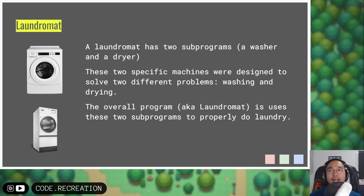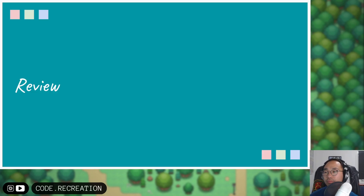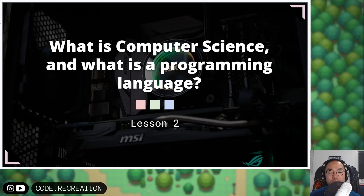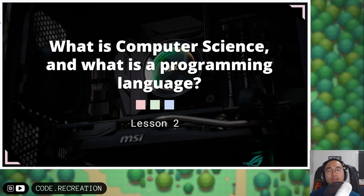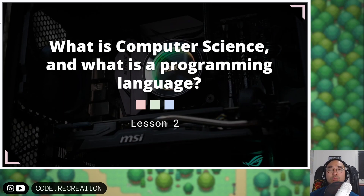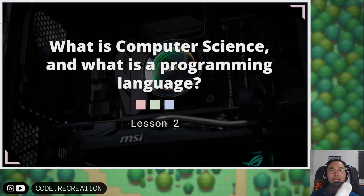So that is how a programming language is formed and that is what we study in computer science. We really worry about computation, information, and automation, and we really worry about algorithms and data structures. Those are all concepts that we are going to be introduced to in this course. As always, thank you for watching and stay classy.